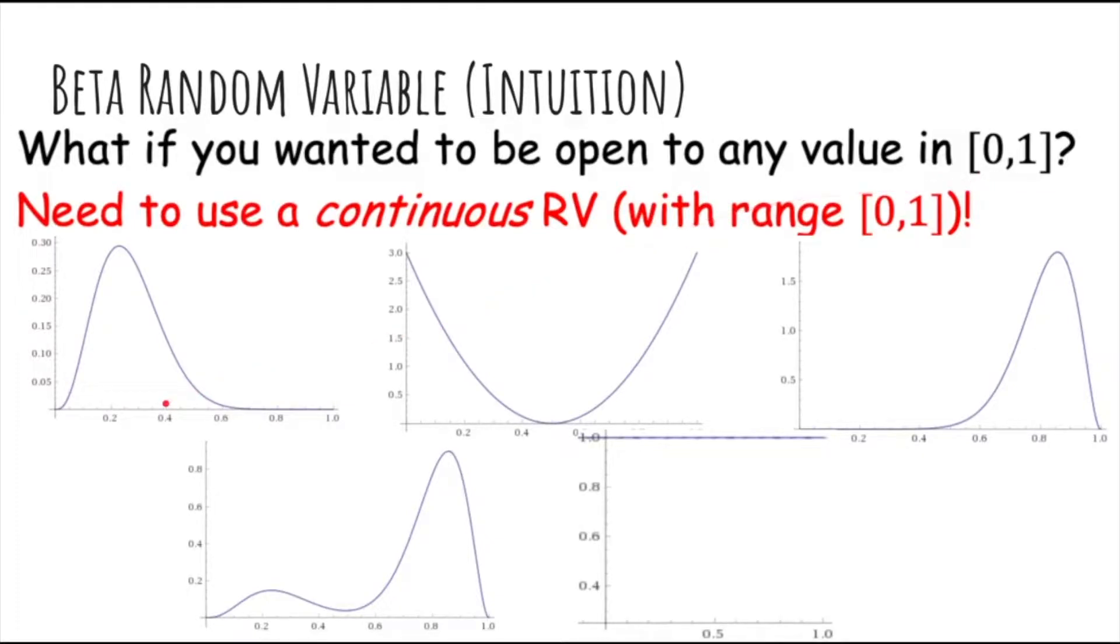For example, if you think that the probability is probably around 20%, you might use this distribution, so it's most likely that the probability of heads is close to 20%. Or if you think that it's around 80%, you might use this distribution. Or if you have no idea and you want to make every probability equally likely, you could use a uniform like this.